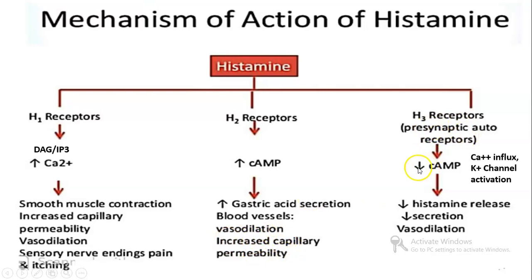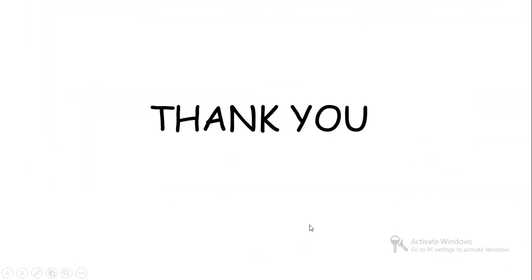H3 receptors decrease cyclic AMP; calcium influx and potassium channel activation also occur. As a result, H3 receptor activation decreases histamine release, decreases secretion, and causes vasodilation. Thank you.